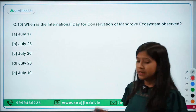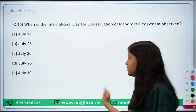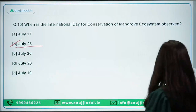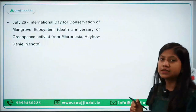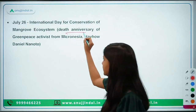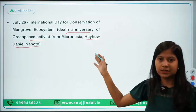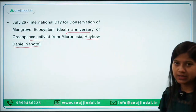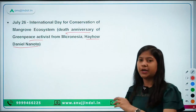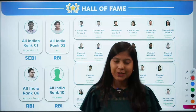When is the International Day for Conservation of Mangrove Ecosystem observed? The answer is July 26. This day is observed in commemoration of the death anniversary of Greenpeace activist from Micronesia, Daniel Nanoto, who died on July 26. In memory of his work towards conservation, this Mangrove Conservation Day is observed. Thank you so much for watching this video — have a good day.